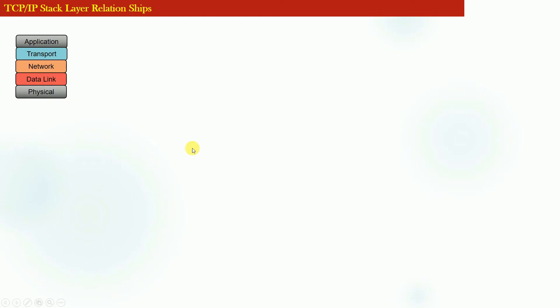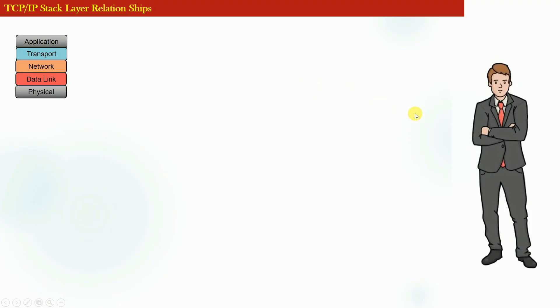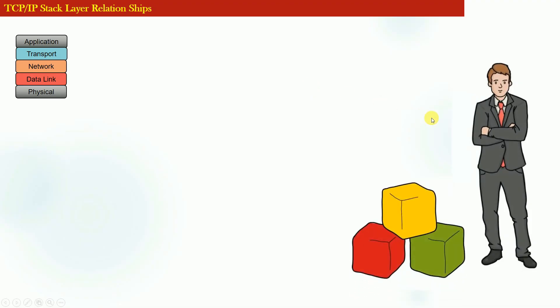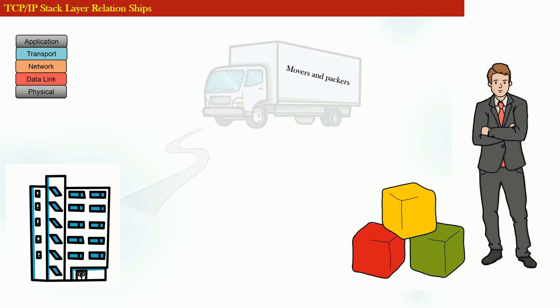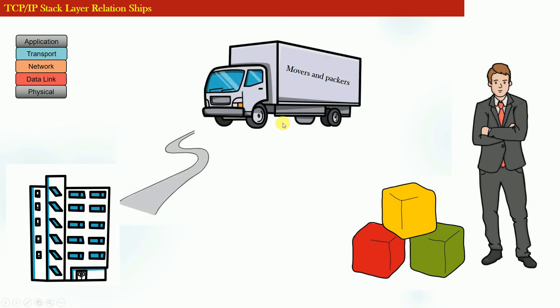Let us try to understand the relationship between different layers of the TCP/IP stack with the help of a real-world analogy. Suppose we have a gentleman who has packed his luggage because he has decided to move from his current residence to a new residence a few miles away, and for transportation of his luggage he has hired a courier company called movers and packers. This gentleman looking to be transported to his new residence represents an application, and his luggage is the application data.